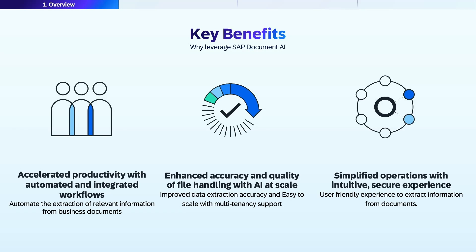This service helps you to automate the extraction of relevant information from business documents. Second is enhanced accuracy and quality of file handling with AI at scale. This service provides data extraction with greatly enhanced accuracy using a blend of pre-trained and large language model capabilities, and can support extraction requirements at scale.